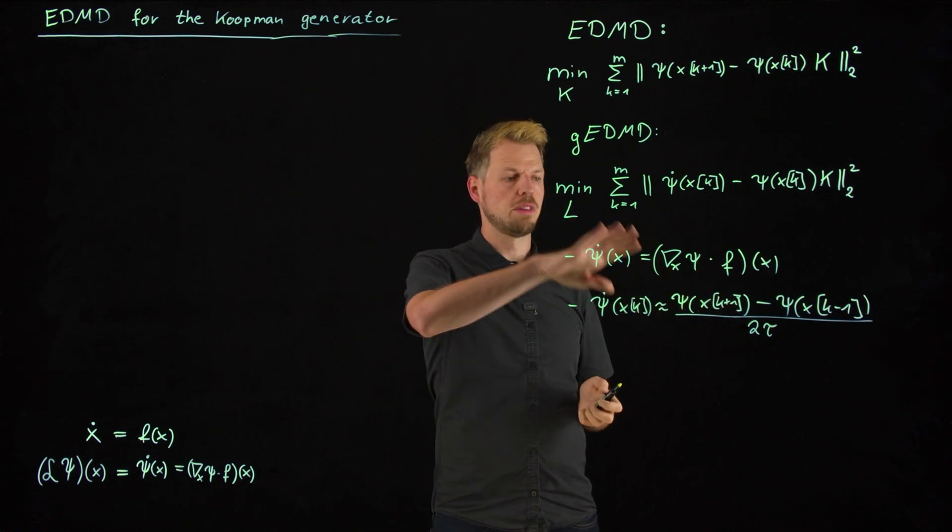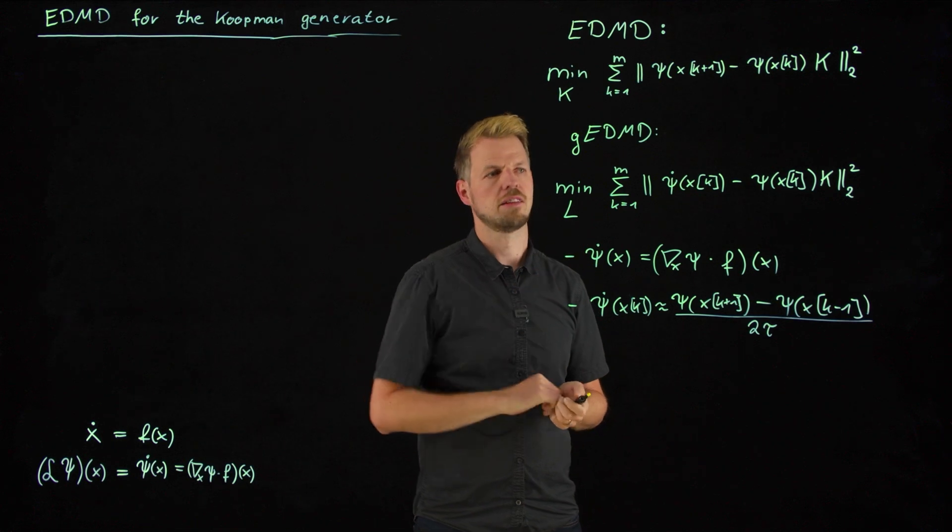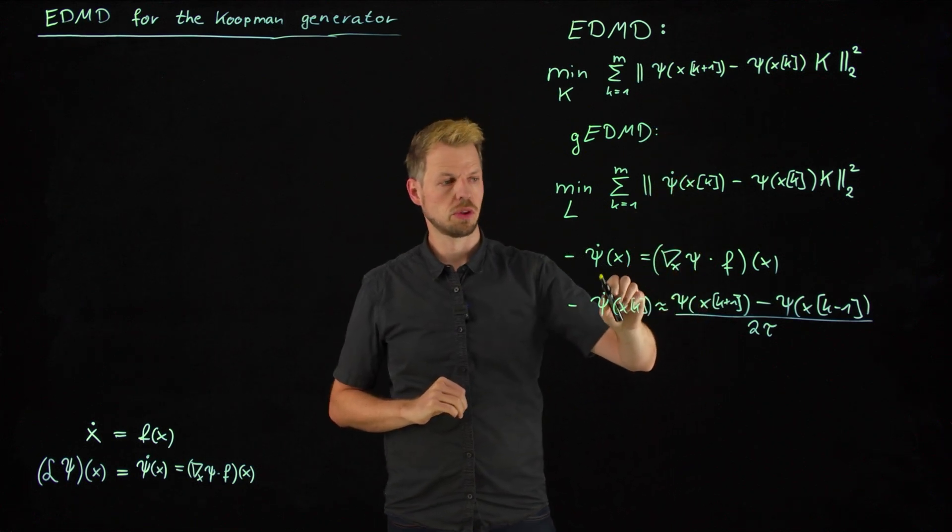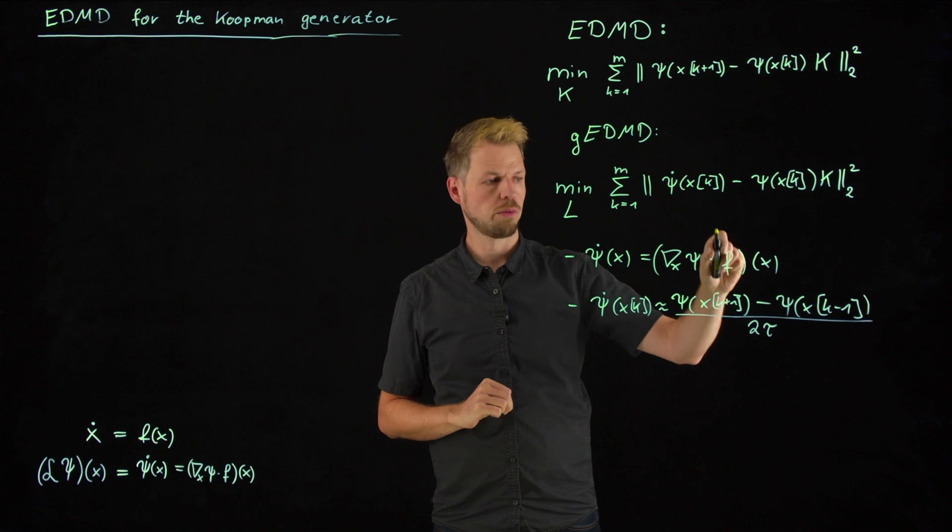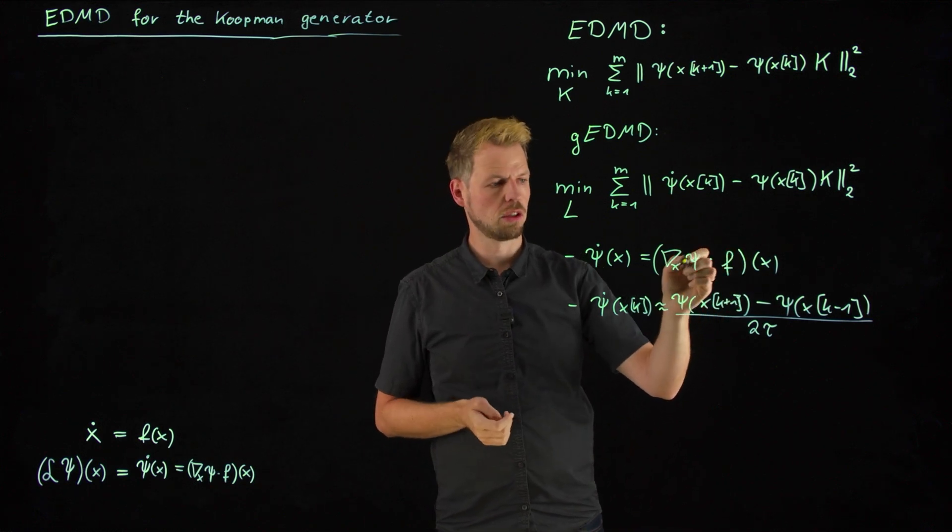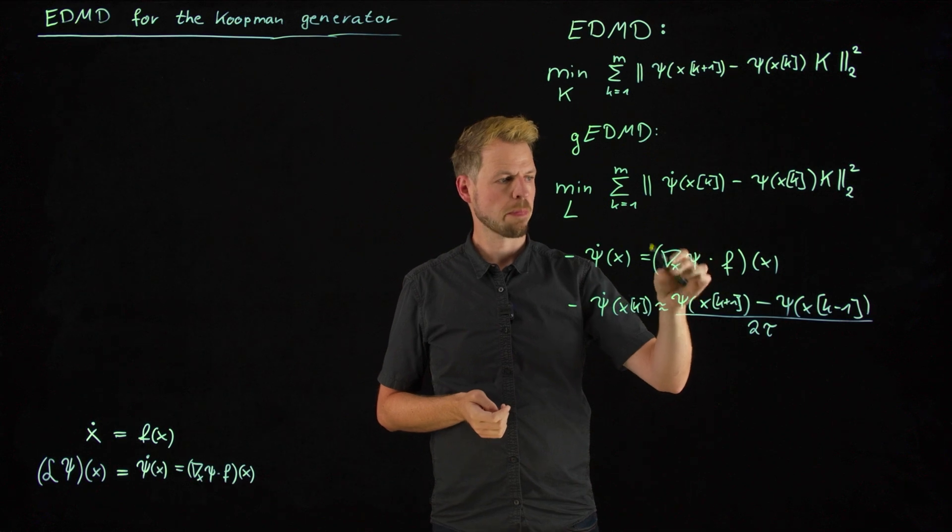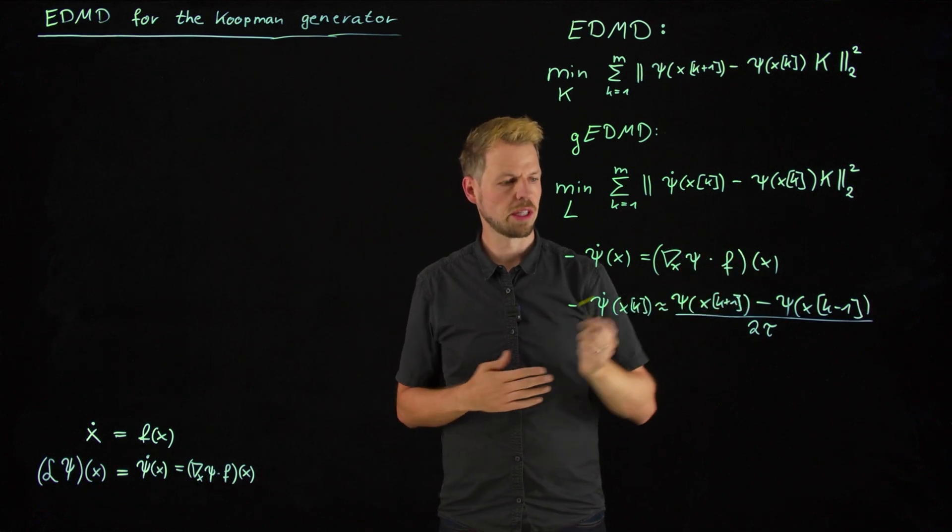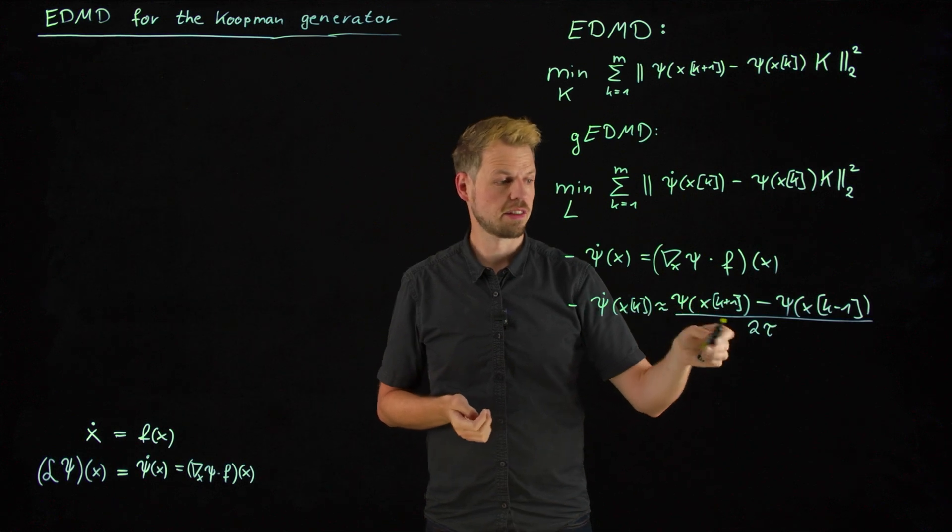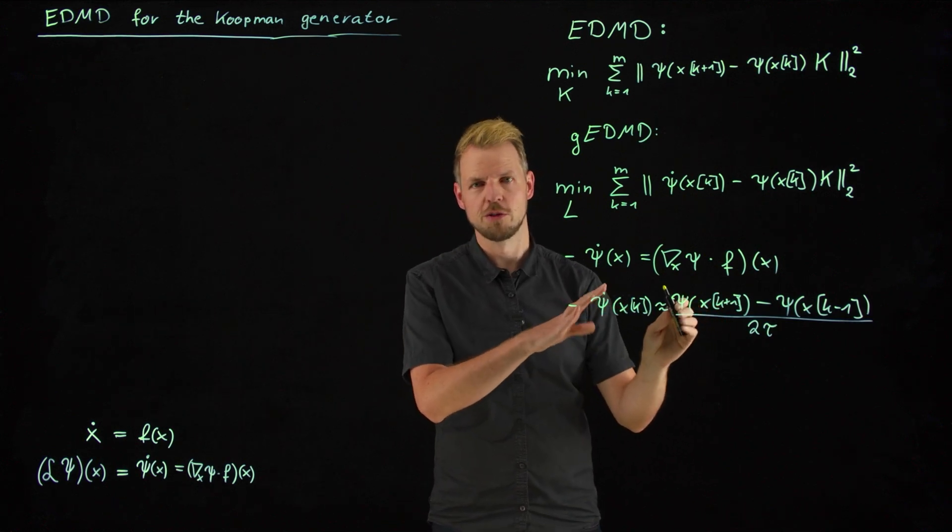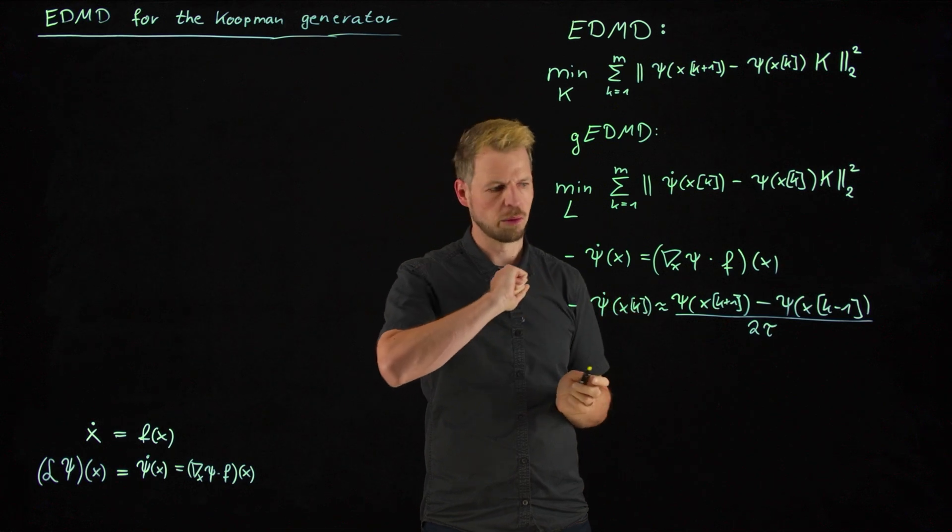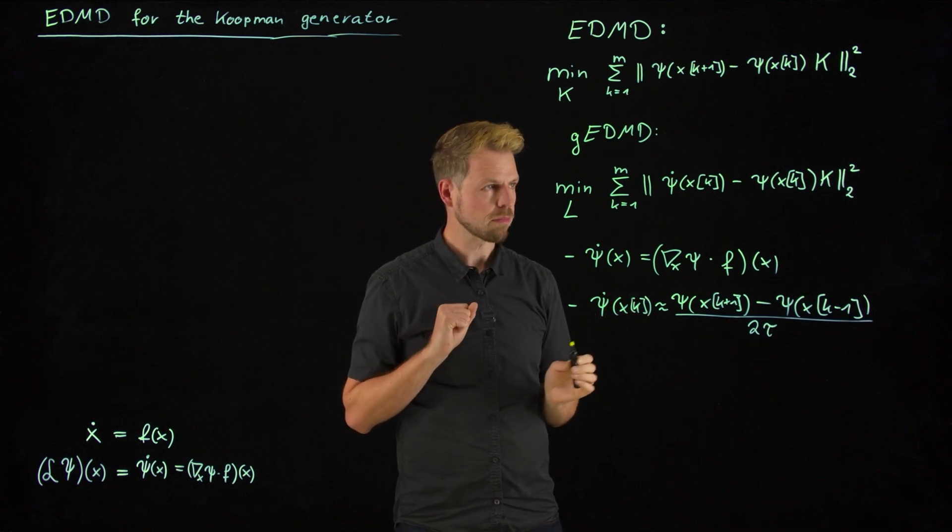So all we need is we need time series data, exactly as in EDMD. And then we need time derivatives. So these can be computed if we know the right hand side of our dynamics, and have the analytic derivatives available. This can be done in this way, very nicely. This is a more ad hoc version, more messy version, if you wish. For noiseless data, this is perfectly fine. For noisy data, one has to be a little bit careful here.